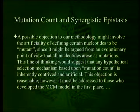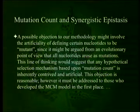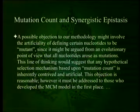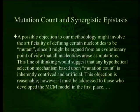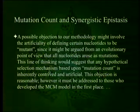A possible objection to our methodology might involve the artificiality of deciding certain nucleotides to be mutant, since it might be argued from an evolutionary point of view that all nucleotides arose as mutations. This line of thinking would suggest that any hypothetical selection mechanism based on mutation count is inherently contrived and artificial. This objection must be addressed to those who developed the MCM model in the first place. However, the objection is essentially saying there is no fittest organism and there is no mutation — a mutation of a mutation is just another mutation. Once you go down that road, you have no way of improving an organism.